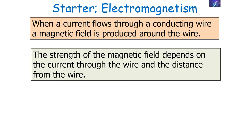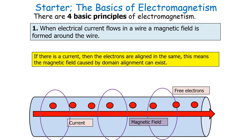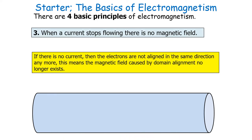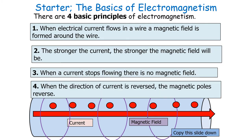The magnetic field and the electrical current always act at right angles to each other. There are four key principles of electromagnetism. Number one: when an electrical current flows in a wire, a magnetic field is formed around the wire. Number two: the stronger the current, the stronger the magnetic field. Number three: when a current stops flowing, there is no magnetic field. Number four: when the direction of current is reversed, the magnetic poles reverse — north and south switch position.